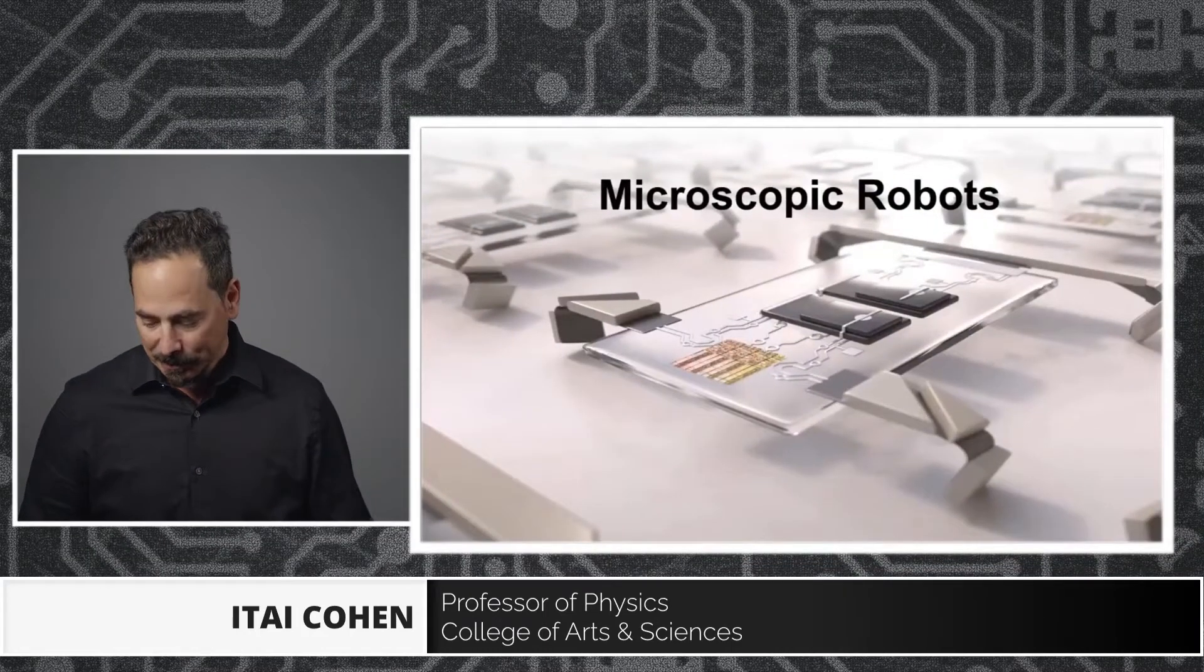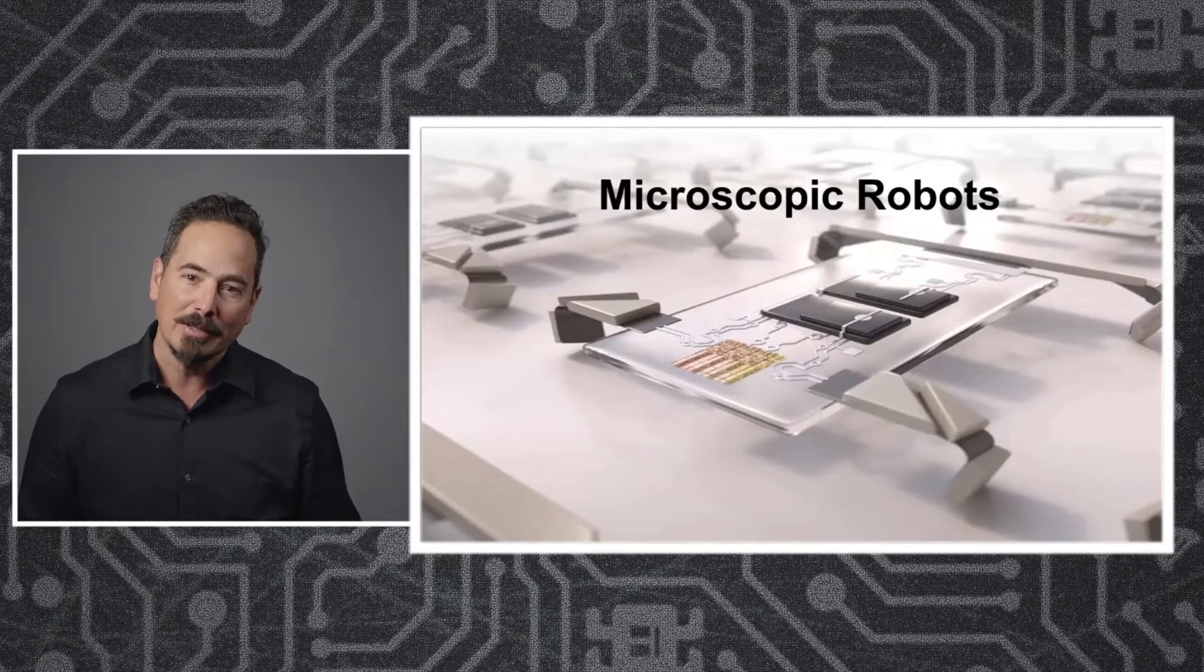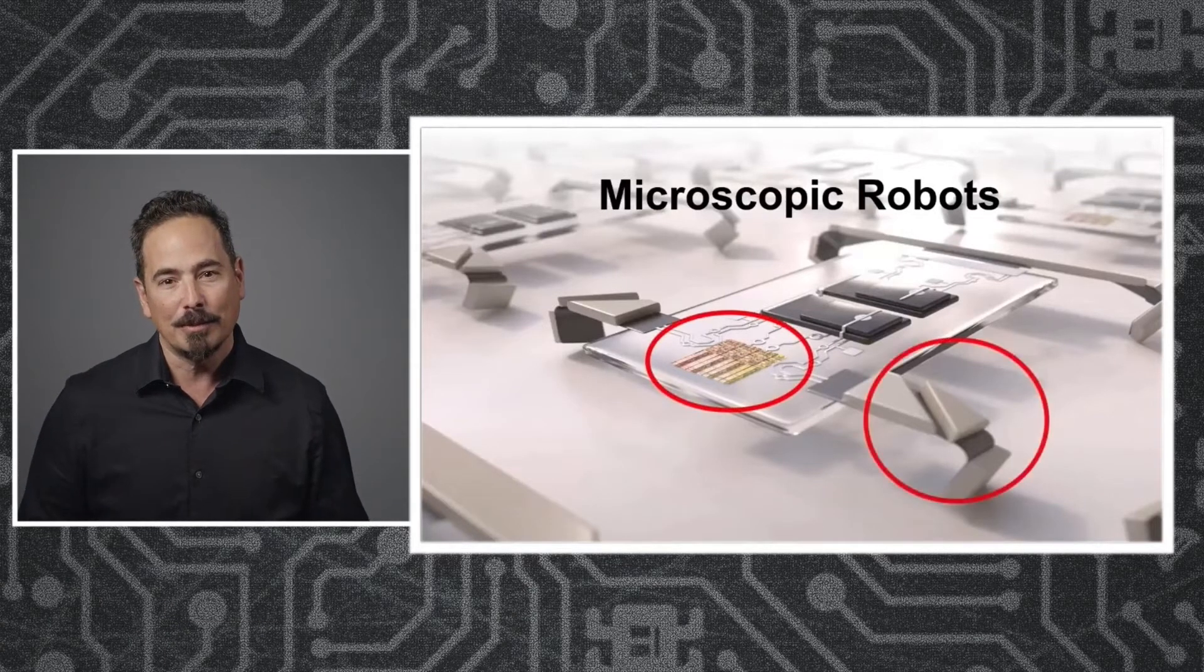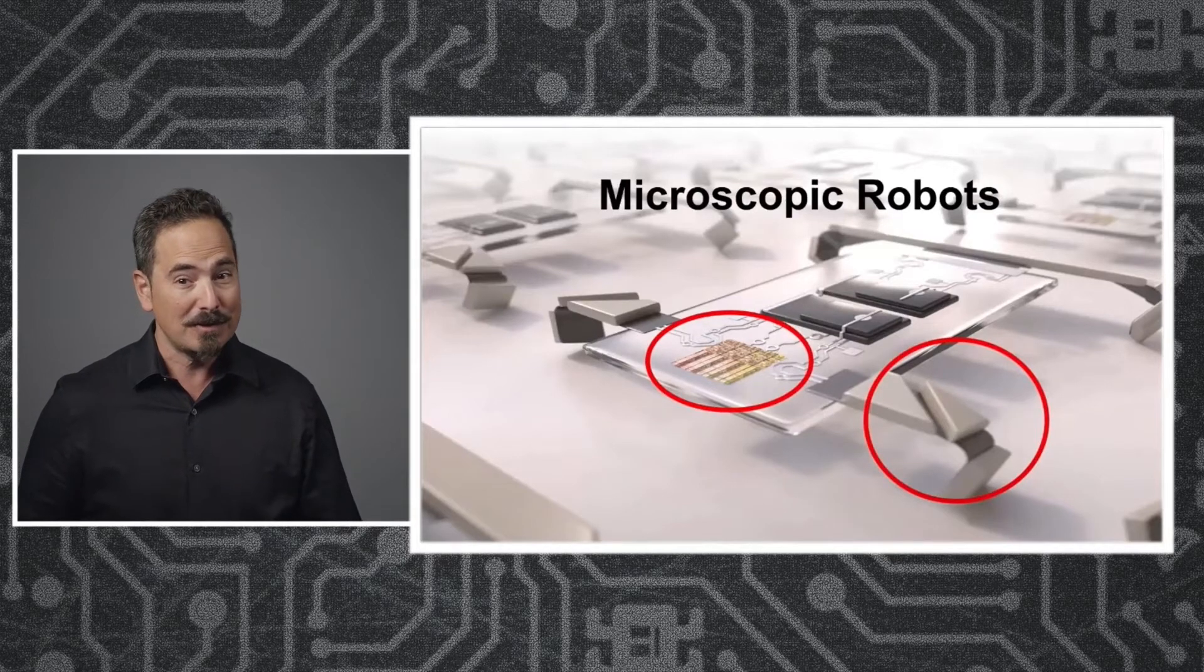So, what's involved? Well, essentially a robot is composed of two parts: a brain and the actuating limbs. Now, the brain, believe it or not, is actually simple because 50 years of Moore's Law has solved that problem. We can now make microcircuits that are so small that they could fit really easily on the kinds of footprints that we're talking about. The legs, on the other hand, are a major challenge.